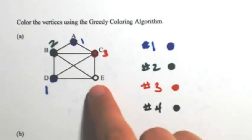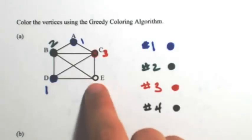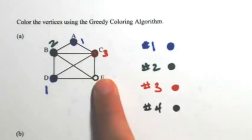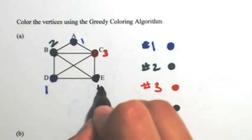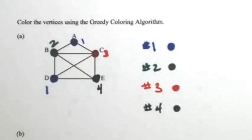The last letter is E. E is connected to the 1, so I can't use that one. 2, can't use that one. 3, can't use that one. So I have no choice. I've got to use the fourth one. This one needed 4 colors using the greedy coloring algorithm.